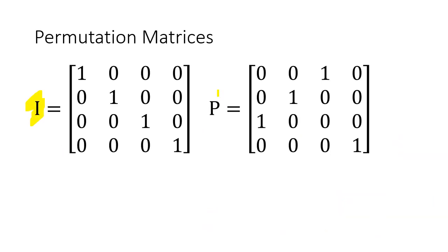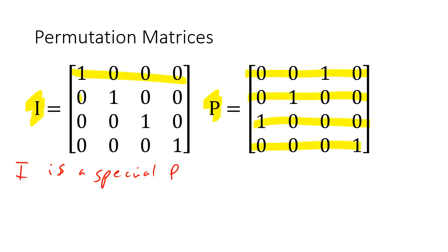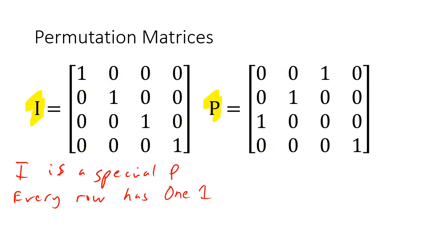Now let's meet P, and you'll notice there are some similarities. I is actually a special case of P. If you look at these matrices, every row only has one 1 — that's true of the identity matrix because the identity matrix is also a P. Every row has one 1, and every column only has one 1.